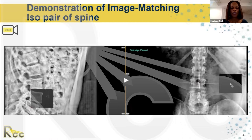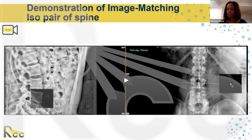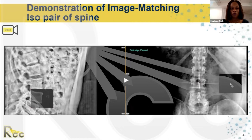The first example we have is a lateral view and an AP view of the lumbar spine. A point of reference I like to start with: whenever you take images, make sure the view is big enough that you can see a lot of different landmarks. On the AP view, we're able to see the iliac crest and the floating rib at T12. On the lateral view, we're able to see each vertebral body pretty clearly, which tells me this is probably a KV image.